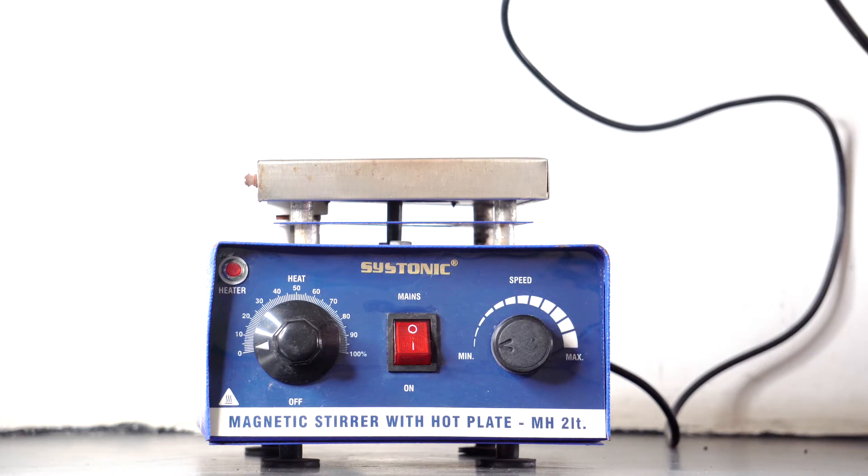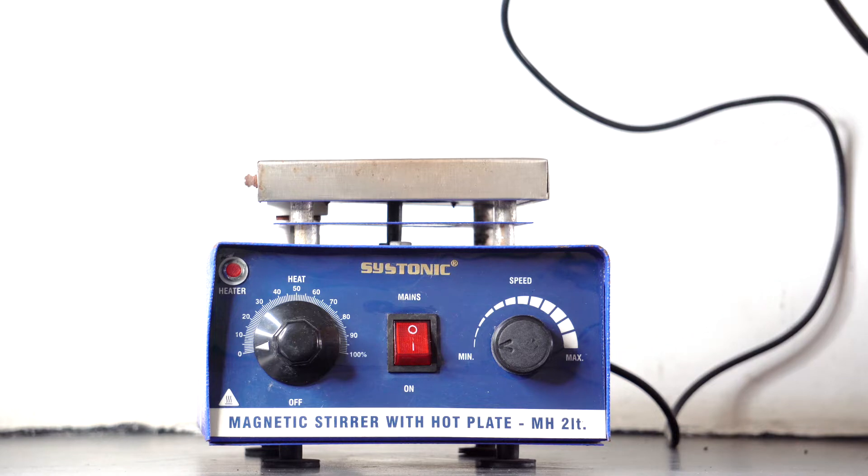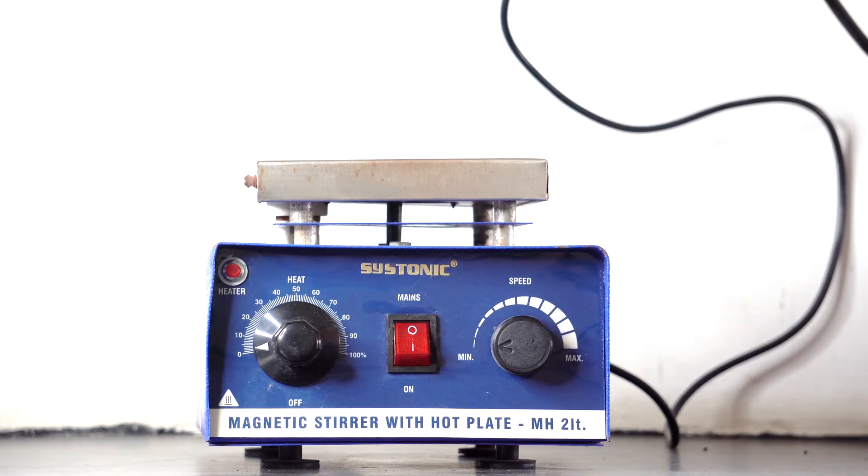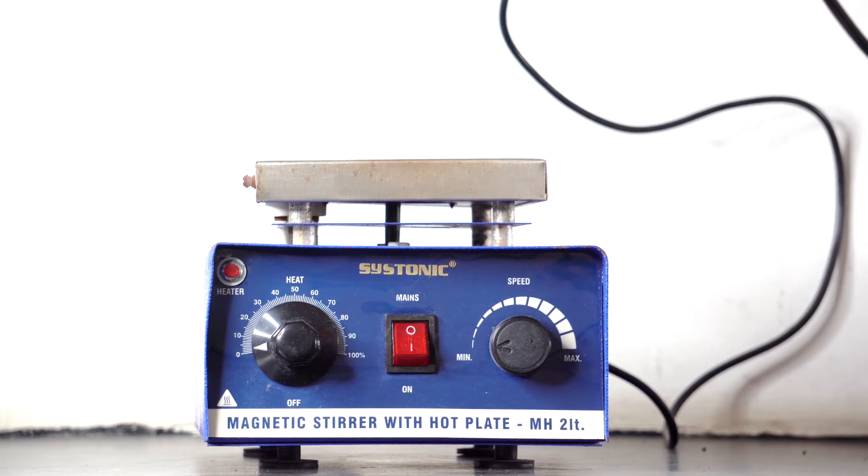In today's video, let's get to know how to operate a magnetic stirrer with hot plate. A magnetic stirrer is a device commonly used in soil science and microbiology laboratories for the purpose of mixing liquids.